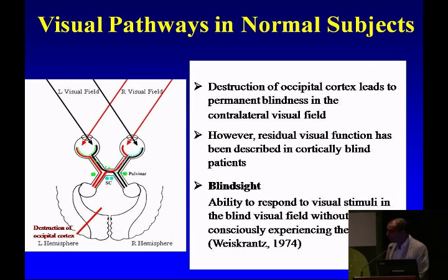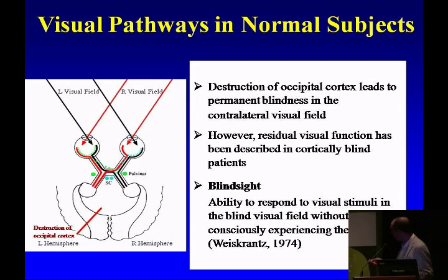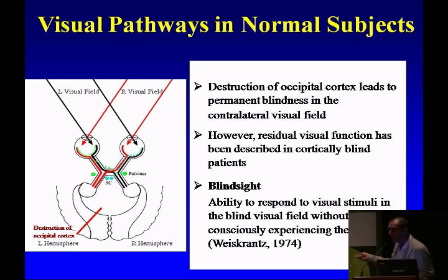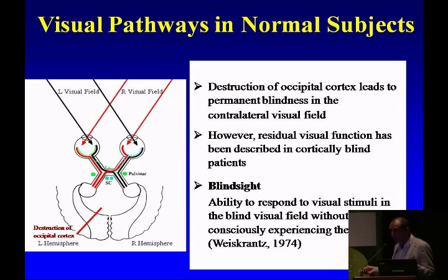In normal subjects, the visual system is organized such that whatever is in the left visual field, the information goes to the right hemisphere, and vice versa. Whatever is presented in the right visual field, the information arrives to the left hemisphere. But there are other pathways that exist — a pathway that goes from the retina to the pulvinar and also to the superior colliculus. The superior colliculus is the structure we are particularly interested in, especially in hemispherectomy subjects where there is an ablation of the whole hemisphere.